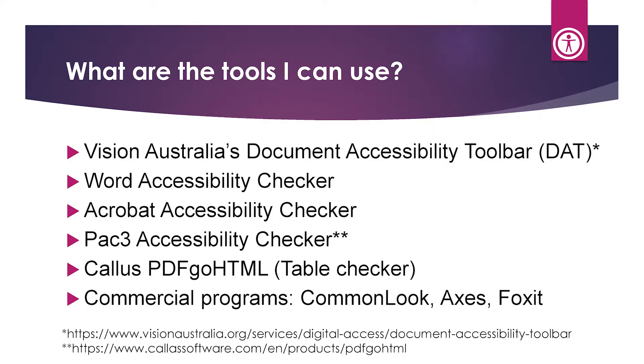There are also commercial programs like CommonLook, Access, and Foxit that help you remediate PDFs faster with built-in tools for speed. But it is really important that you have a firm foundation of what accessibility is, what the guidelines are, and how to comply with them. When those tools don't work exactly as planned, you need to know why. You don't want to think a document is compliant only to find out you've created an accessibility barrier because a tag structure didn't export correctly.